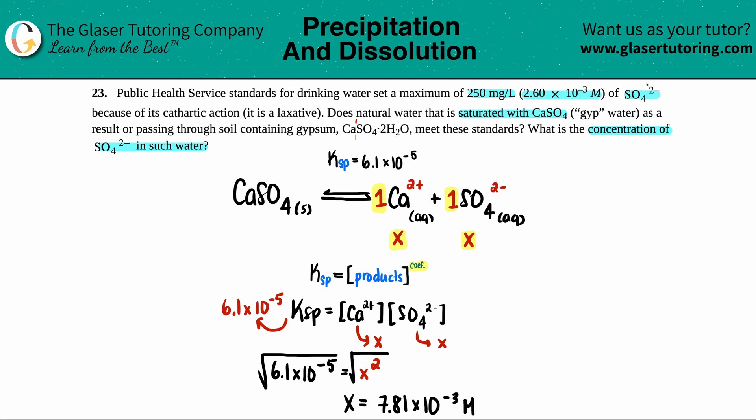Now we need to compare just the sulfate ion. So the only thing that I care about is the sulfate. So the sulfate ion concentration, the SO4 2 minus, was just x. And that's what x was. So this would be 7.81 times 10 to the negative third molarity. So that answers the second question. What is that concentration? It's 7.81 times 10 to the negative third molarity.